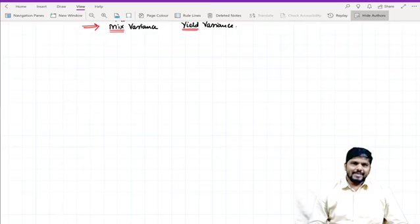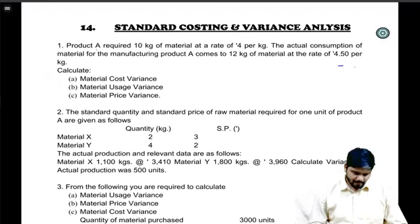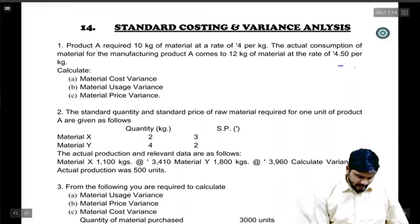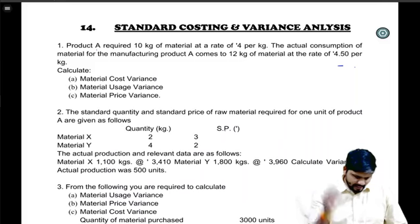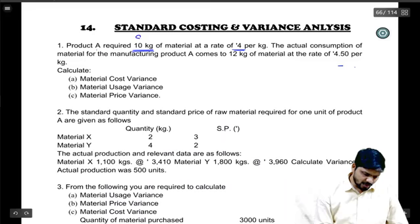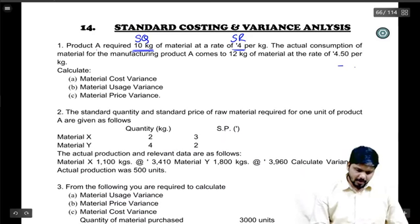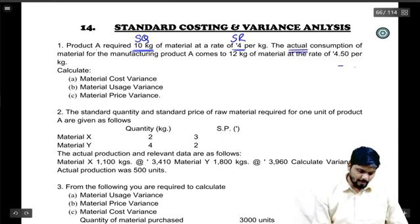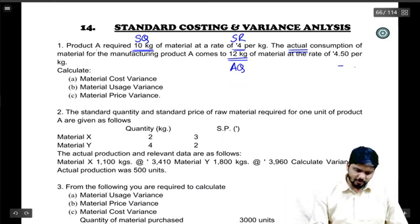Let's start with the basic sum. Product A requires 10 kg of raw material at a rate of ₹4 per kg — this is your standard quantity and standard rate. Whatever the actual consumption of material for manufacturing product A comes to 12 kg — so this is our actual quantity — at the rate of 4.5 — so this is our actual rate.